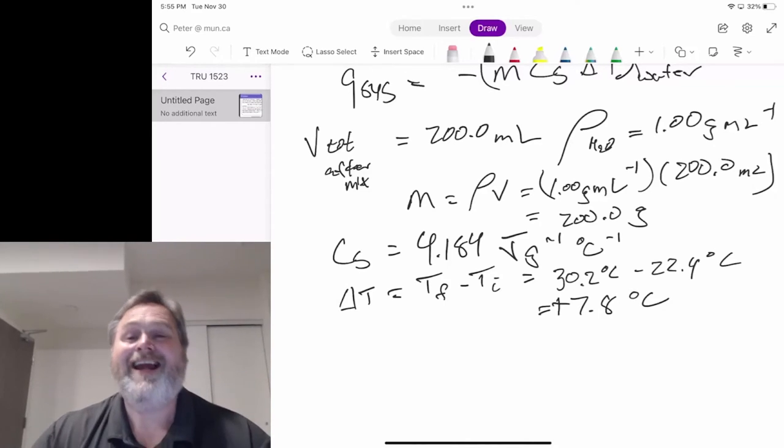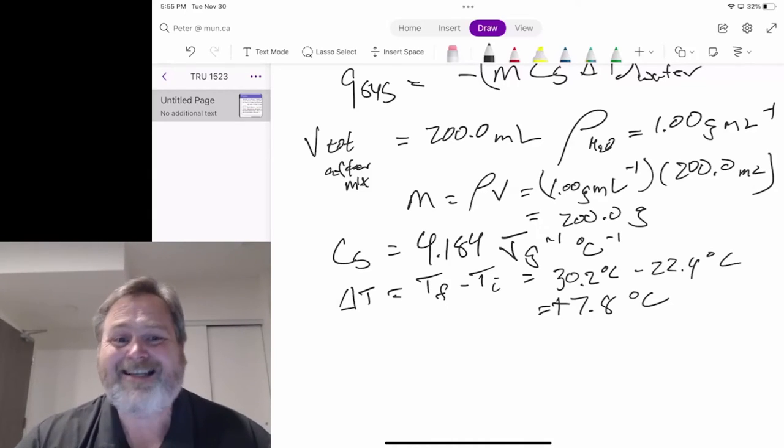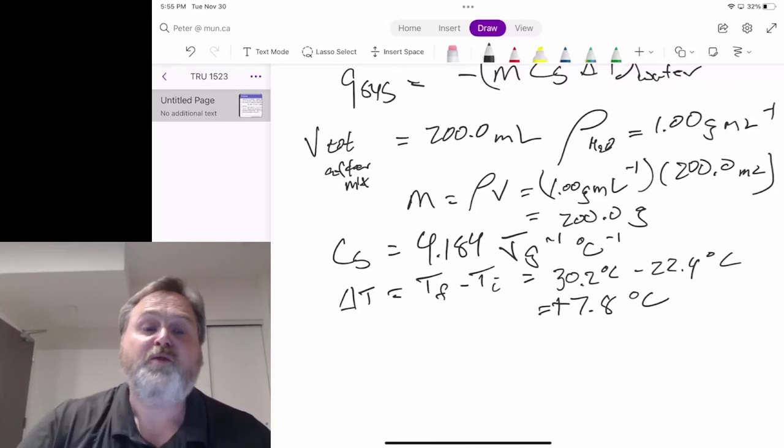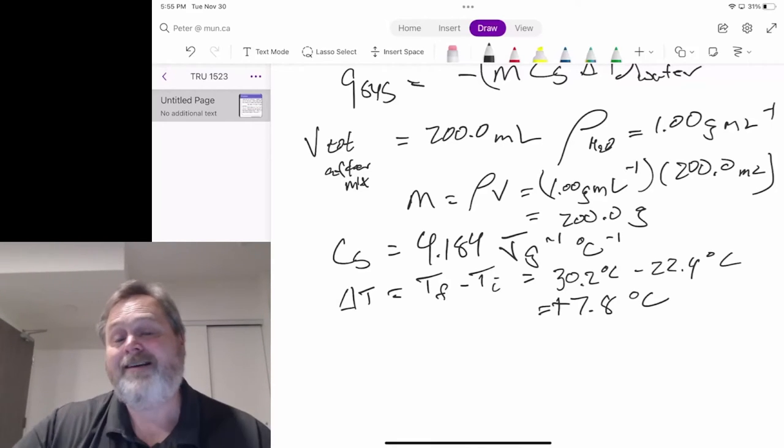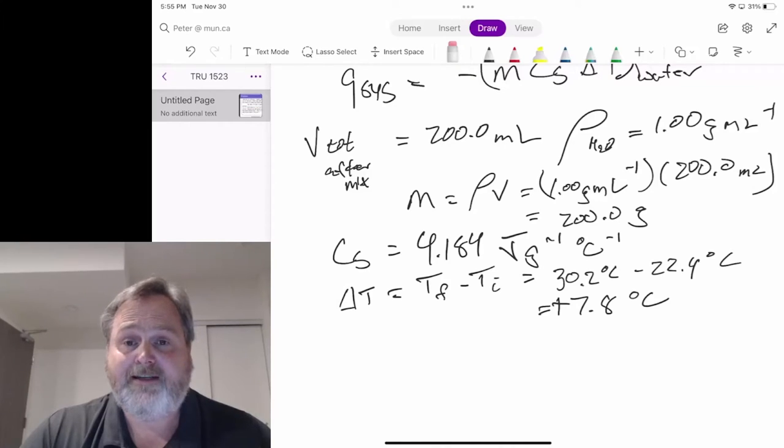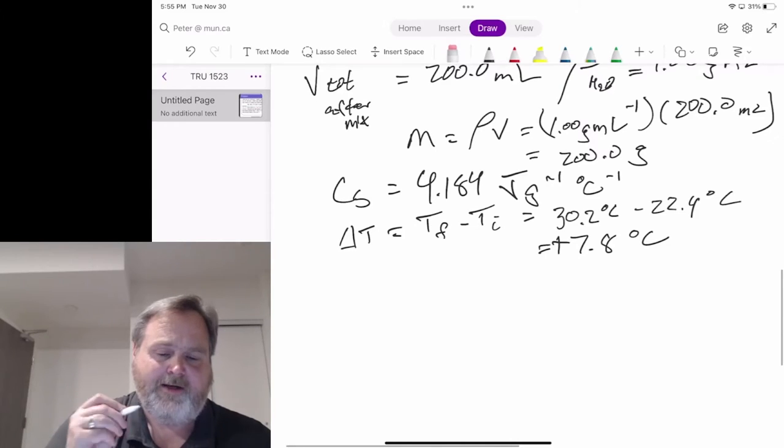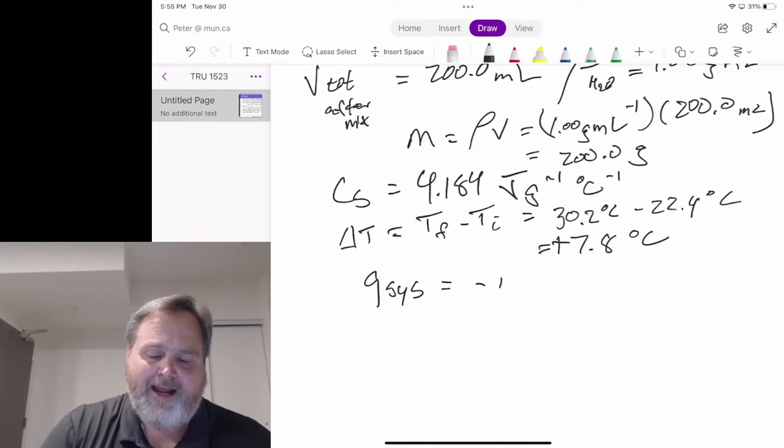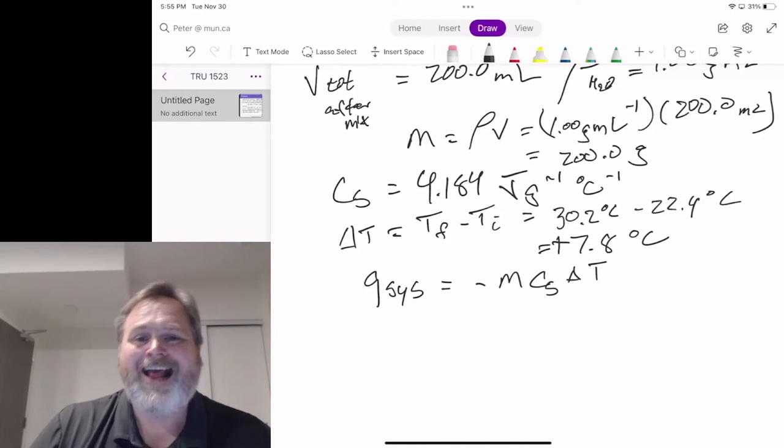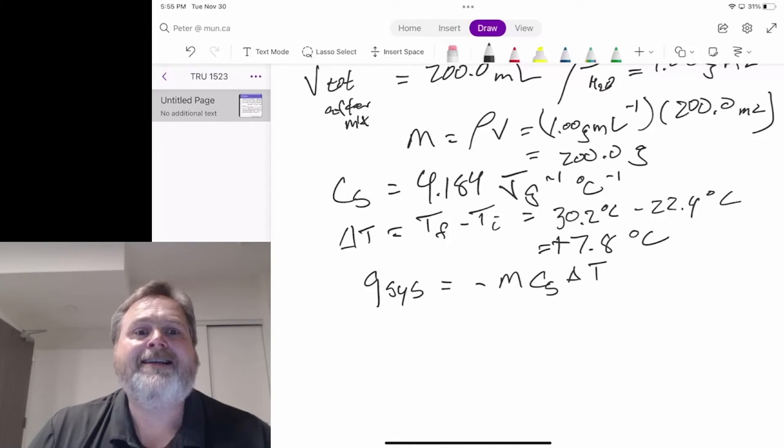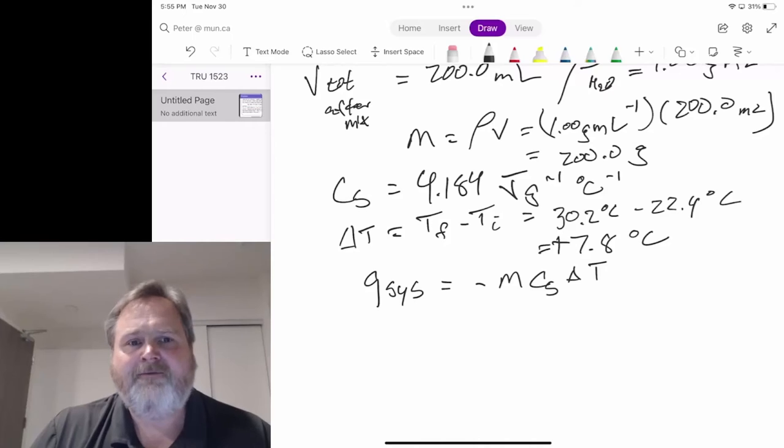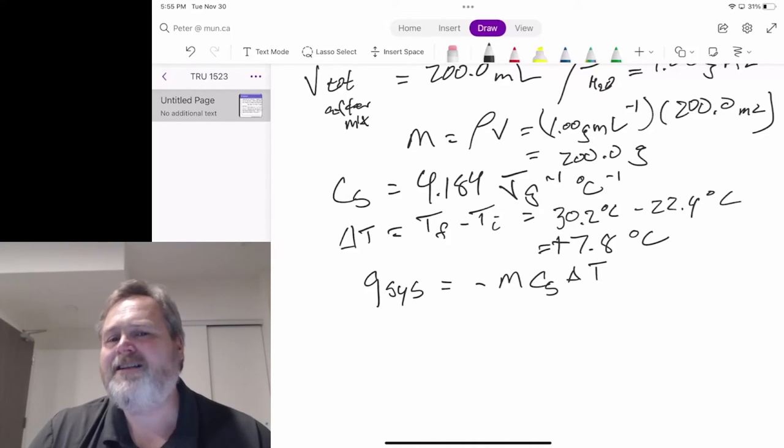That temperature change is positive. The water, the surroundings, is taking in that heat. It's getting warmer because the system is giving that heat off. Signs are important in this particular case. Because of that, when we say Q_sys equals minus m·C_s·ΔT for the water, that positive temperature change and that negative sign ensures that our Q_system is a negative number. The heat is leaving. It's going into the water.